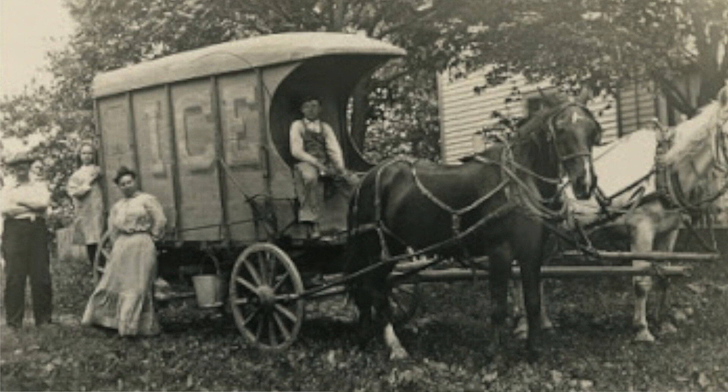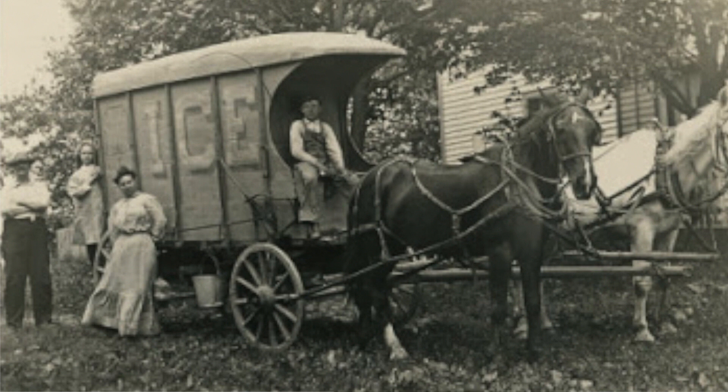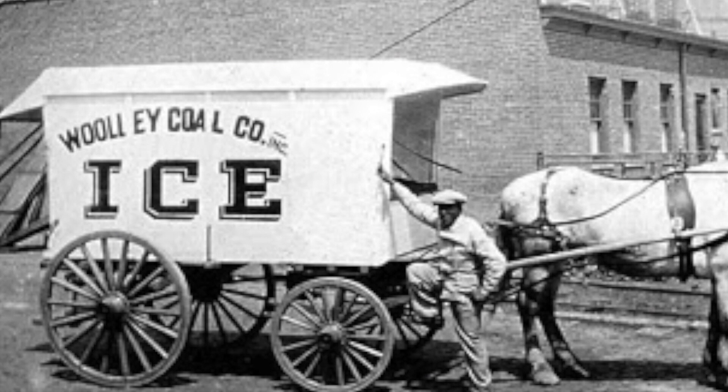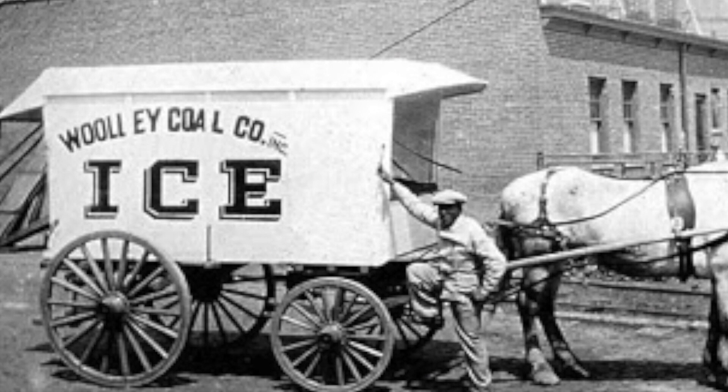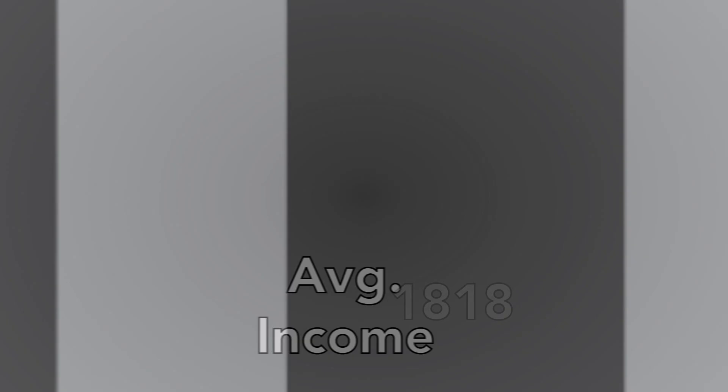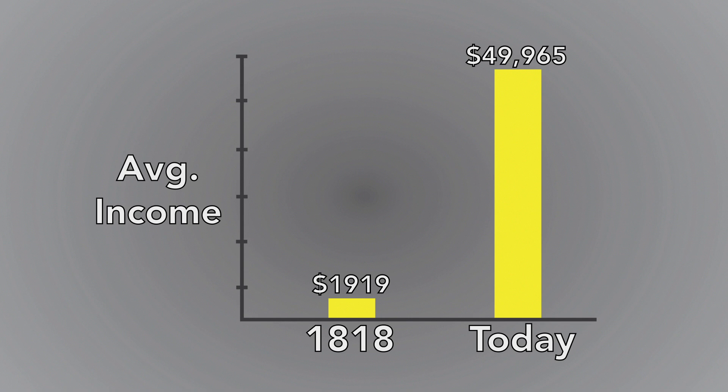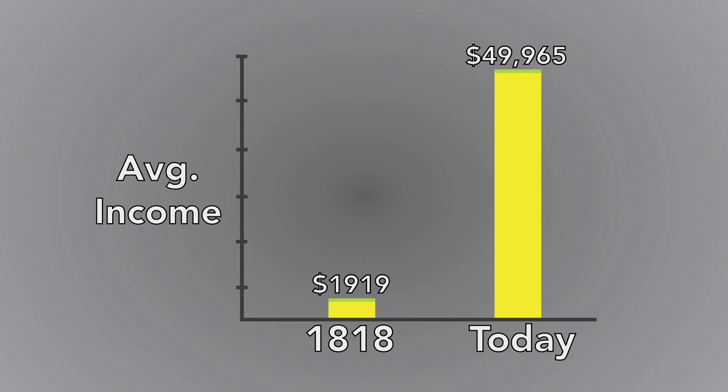By 1818, ice was fetching nearly 25 cents per pound in the United States. Compare that with what ice costs today — ice currently costs about 10 cents per pound, even though we have seen inflation of approximately 1,800 percent since then. The average income per capita in the United States in 1818 was $1,919 per year, compared with $49,965 today. If we look at the price of ice as a percentage of income today compared to 1818, we find that one pound of ice took more than 65 times more income in 1818 than it does today.